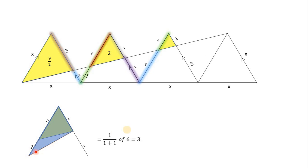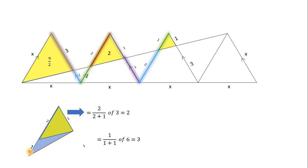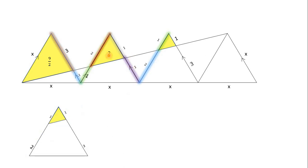Similarly, in the second triangle, joining a line and using the area-and-ratio-of-triangle theorem, we get (1+1)/(1+1+1) of 6, which is 3. This whole triangle has area 3. Since the ratio is 2:1, we get 2/(2+1) of 3, which is 2. So the middle yellow shaded region has area 2.